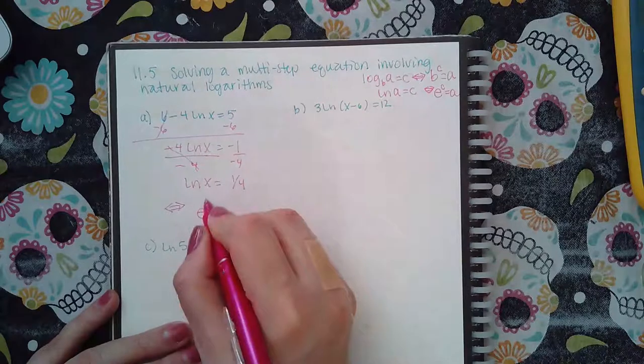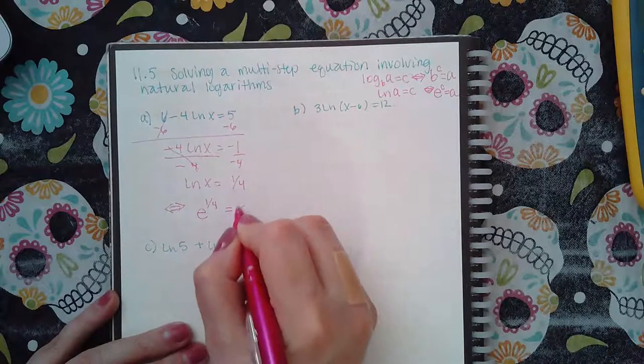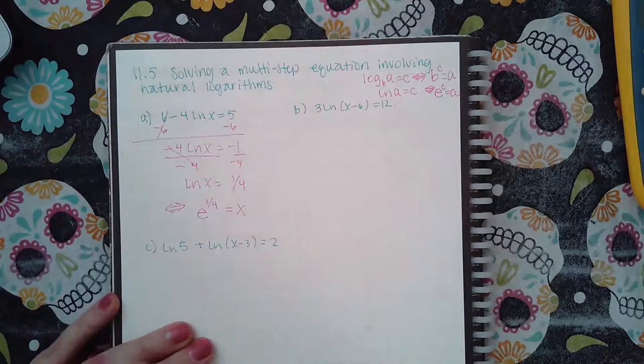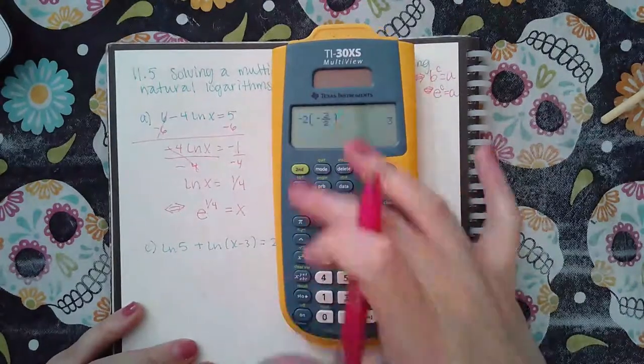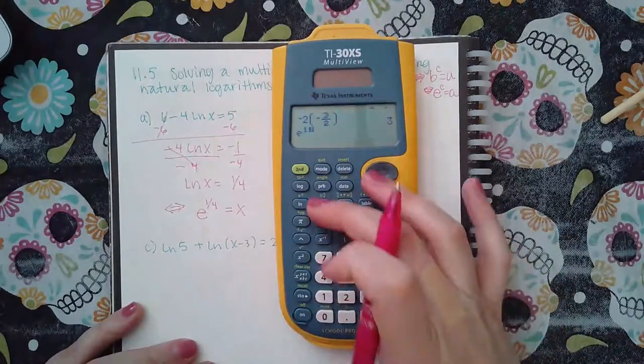And then I can use that definition to switch the form over, so it'll be e raised to this exponent equal to the argument. And I already have x all by itself, so I literally just need to plug into the calculator e to the one-fourth.